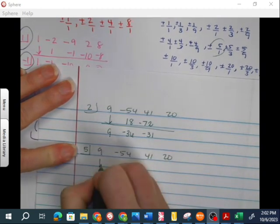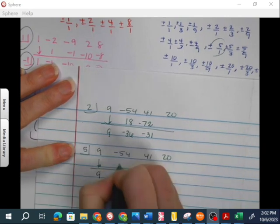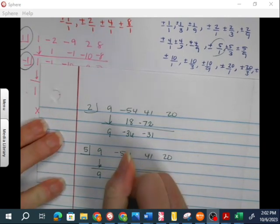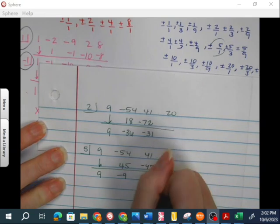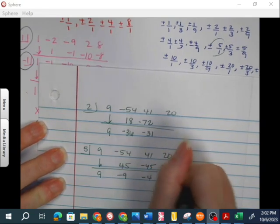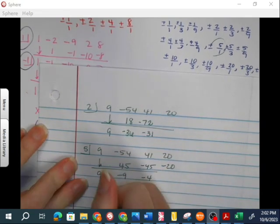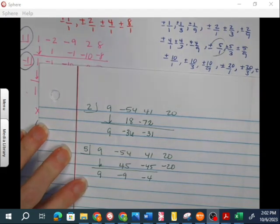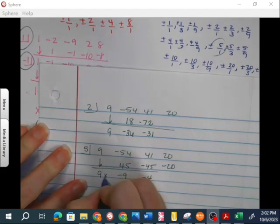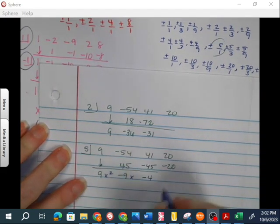Let's try 5. I just feel like if I do 9 times 5, at least that's 45. I'm going to get closer. I do 9 times 5. Ha! Just knew it. Alright, so now that gets me... So it started out cubic, so now this is quadratic. So 9x squared minus 9x minus 4.